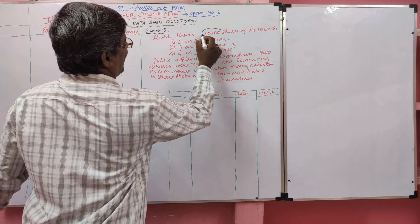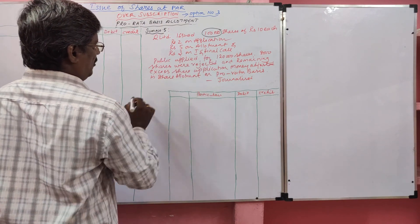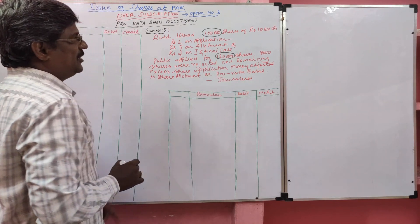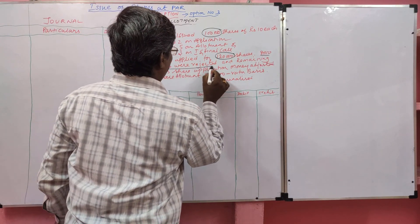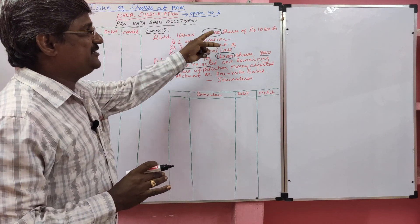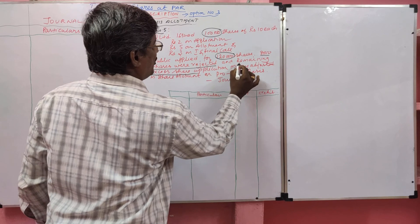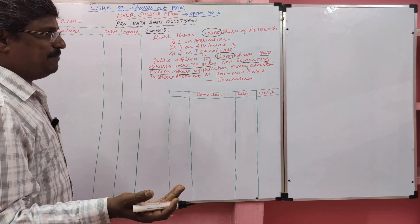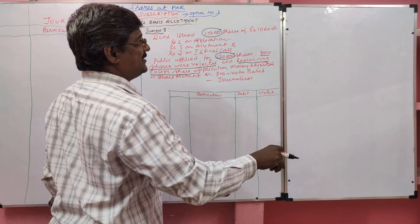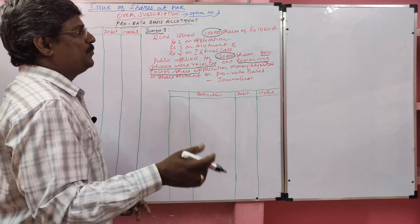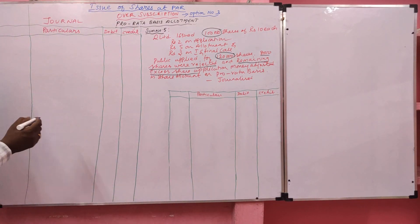Q Limited issued 1 lakh shares of Rs. 10 each: Rs. 2 on application, Rs. 5 on allotment, Rs. 3 on first and final call. Public applied for 1,20,000 shares, so how many shares are extra? 20,000. Of which, 8,000 shares were rejected and refunded. Remaining 12,000 shares were rejected but money not refunded — adjusted in the share allotment on pro-rata basis.